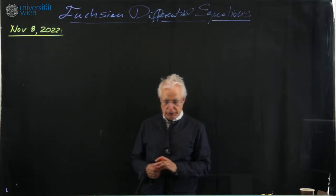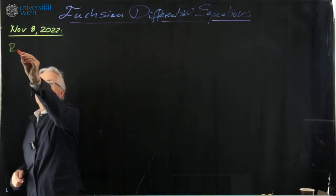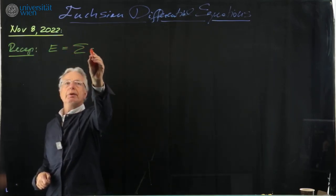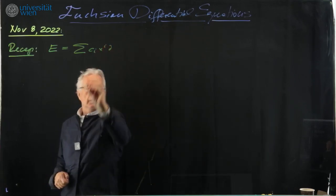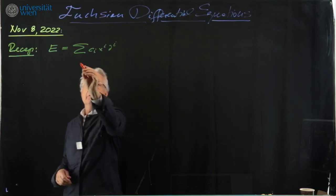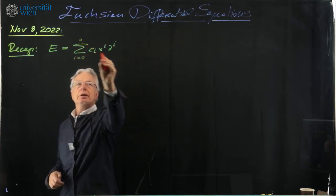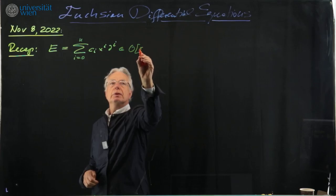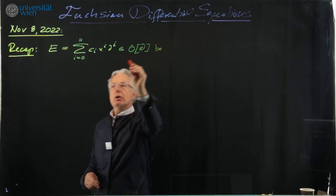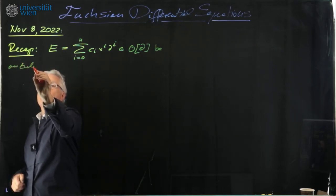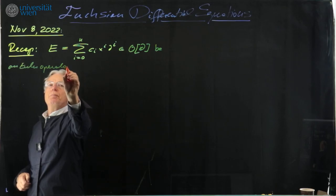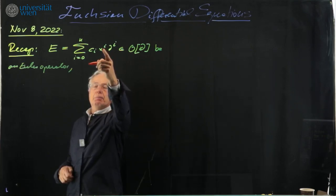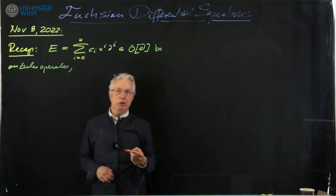Last time we looked at Euler operators. We had E = Σ cᵢ xⁱ ∂ⁱ, for i from 0 to n, in the ring of differential operators. This means the power of the monomial and the power of the differential operator are always the same.